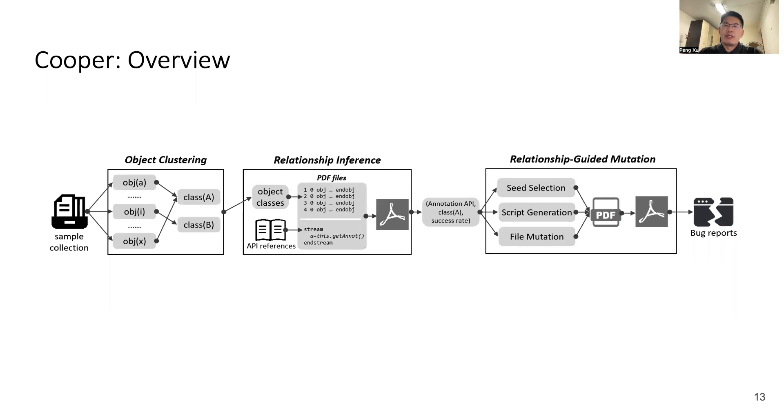The next figure presents an overview of our solution. It has three components. The first component is object clustering. It clusters a large number of native objects into a small number of object classes, according to their semantic feature. Once we have object classes, we need to infer the relationship between object classes and scripting API. This is the purpose of our second component, the relationship inference. This component uses a statistical method to infer the relationship. Finally, we come to the third component, the relationship guided mutation. In this component, we use the inferred relationship to guide the mutation. I will show all components in detail.